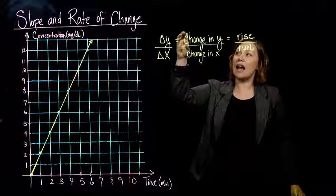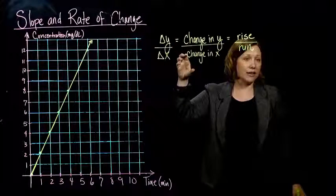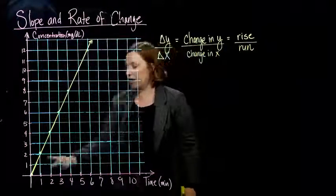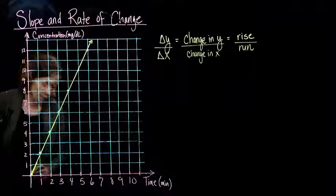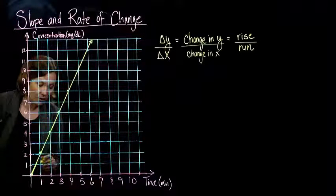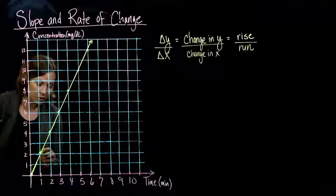So we look at how fast we went up for each unit we go forward. So looking at our graph here, if we go over 1, right? We go up 1, 2.